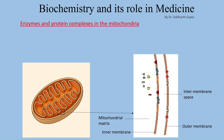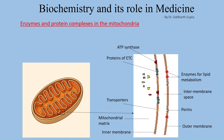To summarize the structures: the outer membrane contains enzymes for lipid metabolism and porins freely permeable to small molecules. The inner membrane contains ATP synthase, electron transport chain components, and selectively permeable transport channels. The mitochondrial matrix contains enzymes such as those participating in the Krebs cycle and beta-oxidation of fatty acids.